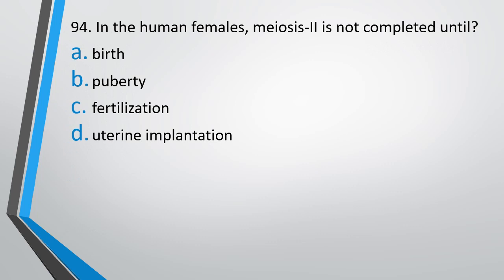Question number 94: In human female, meiosis 2 is not completed until — birth, puberty, fertilization, or uterine implantation. The correct answer is option C, i.e. fertilization.